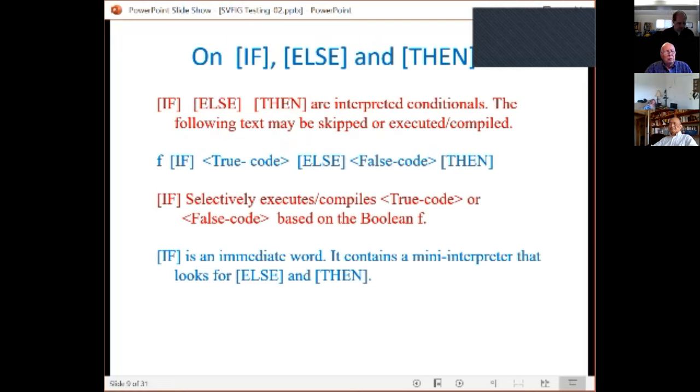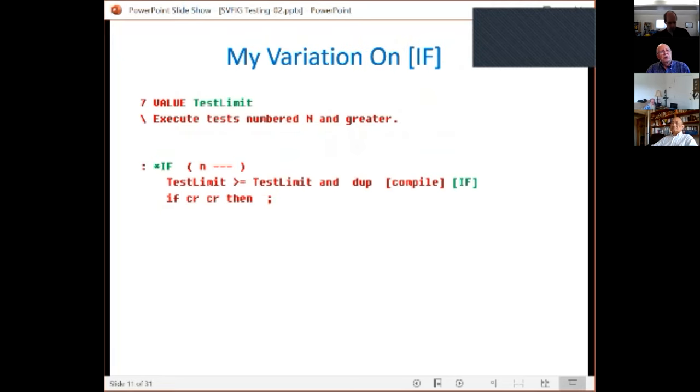The key thing is that the bracket-if contains a mini interpreter, a little text interpreter that scans ahead in the source code looking for the else and the then. Now if we want to build this into test sequences, we need to make the if a little bit smarter and more selective. Here's my variation on the square bracket-if. First we set up a value called test-limit. This value can be from zero to n, unlimited value, positive number, zero or greater. This limits which test will be executed.